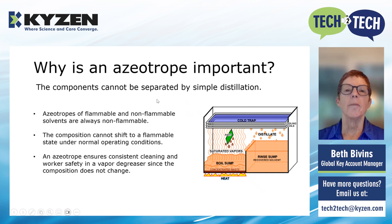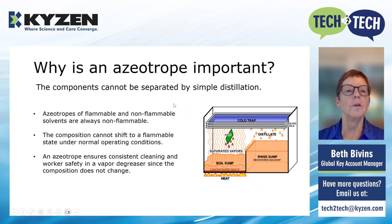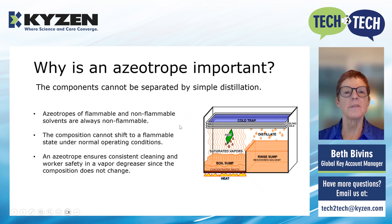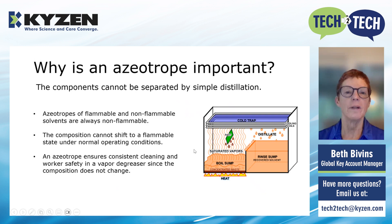So why is it important? The components of an azeotrope cannot be separated by simple distillation — they form a sort of molecular bond that keeps them together. When you make an azeotrope from a flammable and a non-flammable material, the blend is always non-flammable, as long as the non-flammable component is present in the right concentration. The composition doesn't shift. In a vapor degreaser, as the solvent is boiling, condensing, and cycling through the process continuously, the solvent remains the same composition. An azeotrope ensures consistent cleaning and worker safety because it won't turn flammable and cleaning results won't vary based on composition.